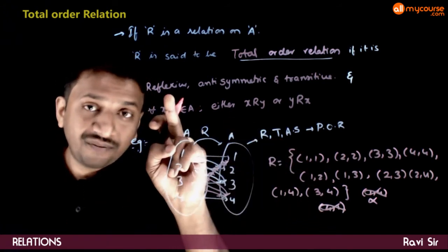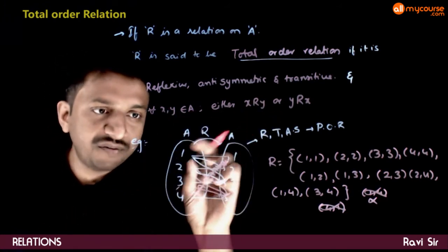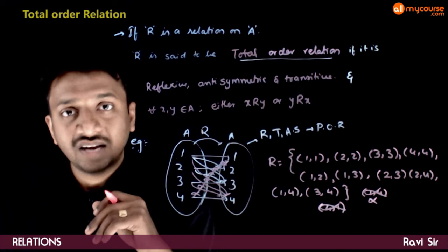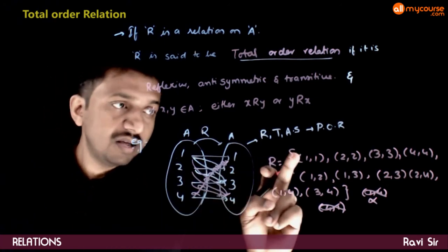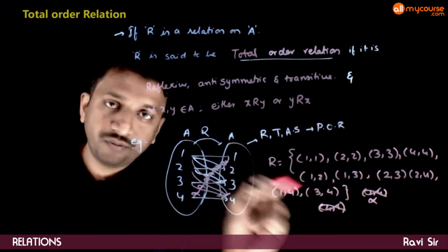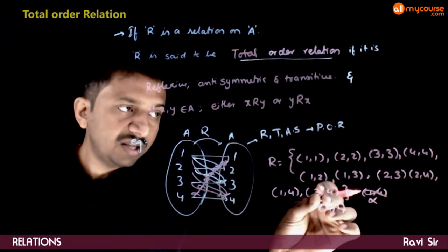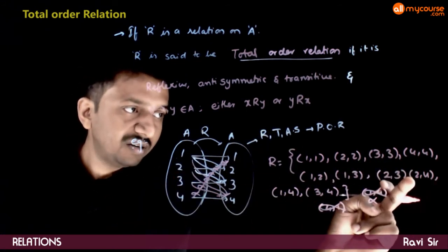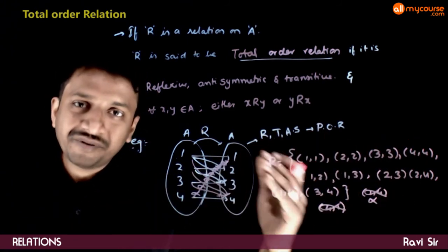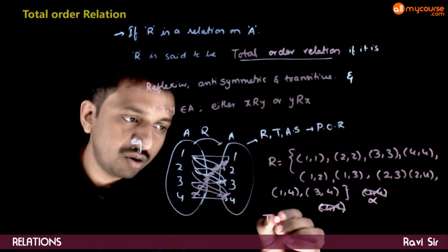Obviously this relation is reflexive and anti-symmetric, and the totality condition is satisfied because for every two elements, either x is related to y or y is related to x. Now, is this transitive? Yes. We have (1,2) and (2,3), and we have (1,3). We have (1,2) and (2,4), and we have (1,4). We have (1,3) and (3,4), and we have (1,4). We have (2,3) and (3,4), and we have (2,4). For every pair (A,B), (B,C), we have (A,C). Hence, this is a total order relation.